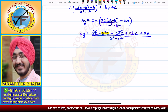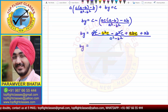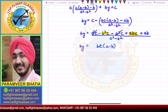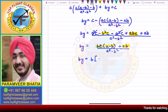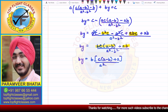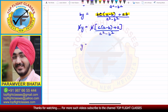Now in the remaining terms I can take bc common out, giving b·y equal to bc times (a minus b) plus ab, divided by a-squared minus b-squared. Taking b common out from the right side gives b·y equal to b times [c times (a minus b) plus a], divided by a-squared minus b-squared.